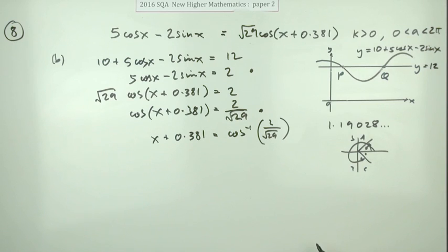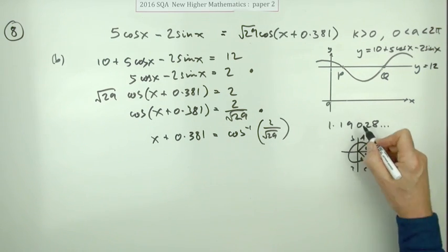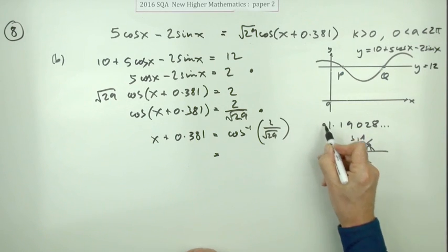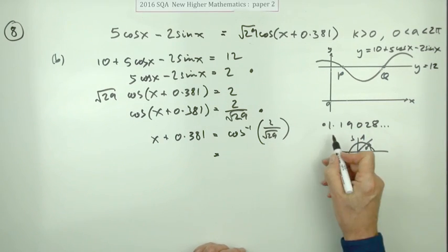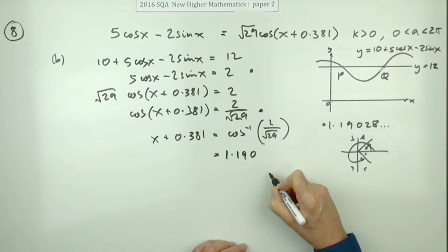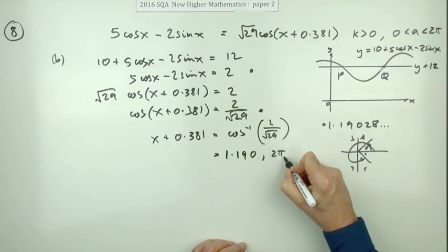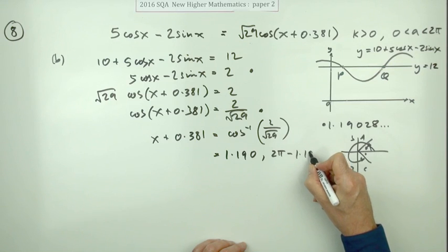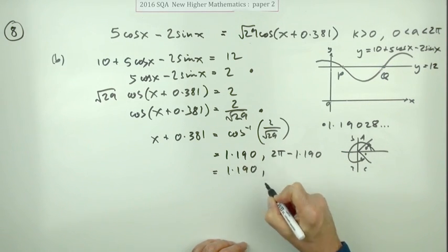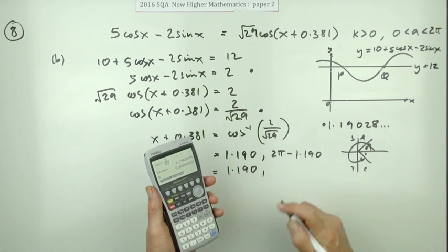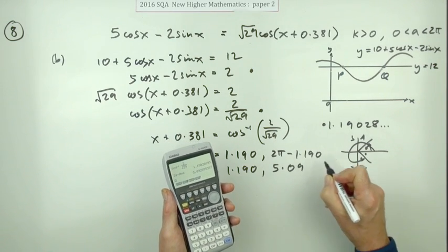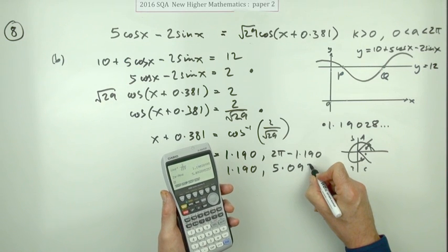It's either this angle here, which will be that one, or it's all the way around to there. If you're doing it in degrees, that'd be 360 minus it. If you're doing it in radians, it'll be 2 pi minus it. So the answers will be, taking it to three decimal places, 1.190 or 2 pi minus 1.190, so it's 1.190 or 5.093.